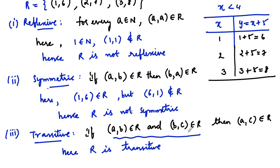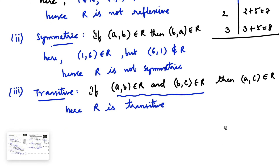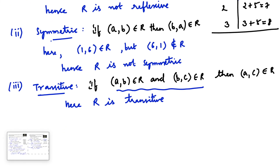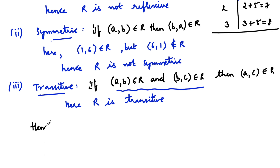If both required ordered pairs are present, we must confirm the third; if they are not present, we need not worry about it. Therefore, R is transitive, and the given relation R is only transitive.